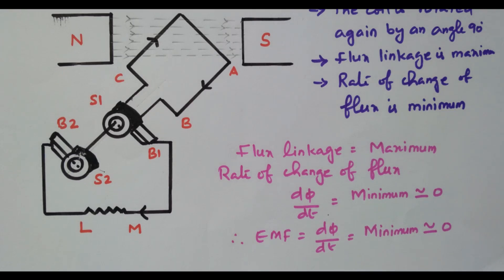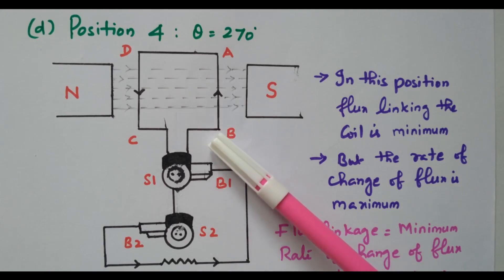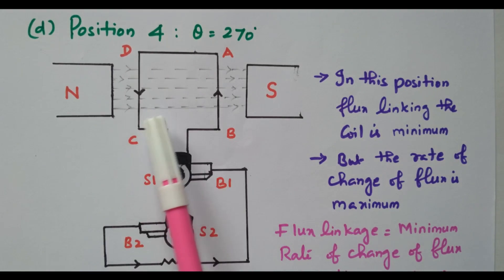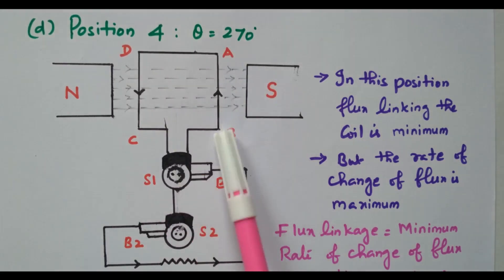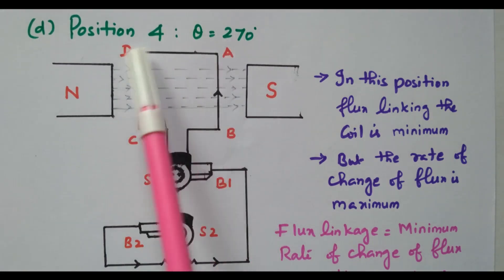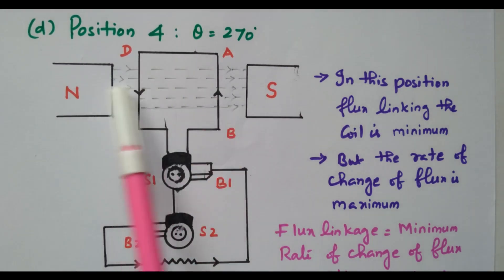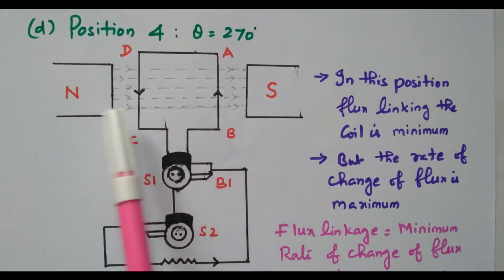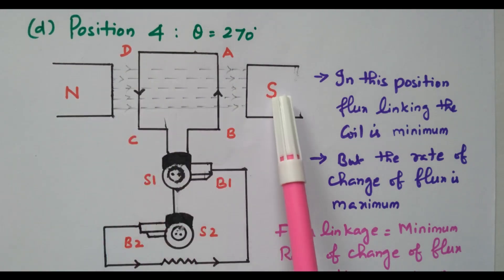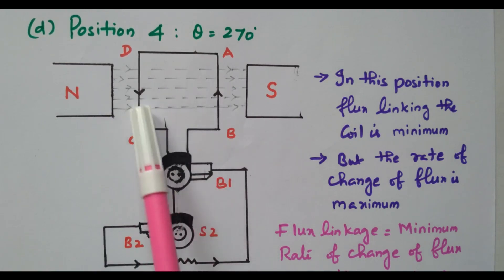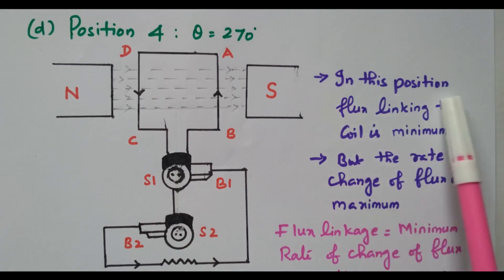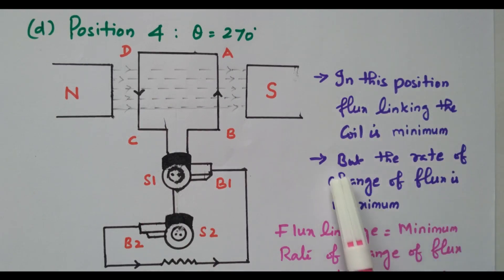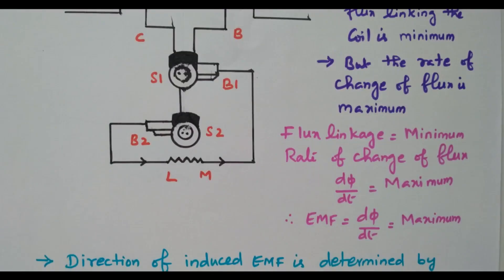The fourth position is 270 degrees — the coil is again rotated anti-clockwise by 90 degrees and is placed horizontally, similar to position 2 but with the conductor directions reversed. The flux linkage of the coil is minimum, but the rate of change of flux is maximum, because the flux from the N pole cannot easily link with the S pole as the coil covers the area. Therefore, the EMF induced is also maximum. From position 3 to position 4, the EMF increases from zero to maximum.